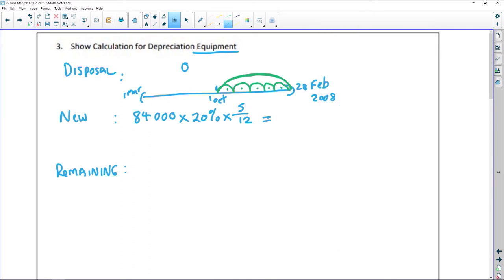On my old or remaining equipment, remember I need my cost minus accumulated depreciation because it is on the diminishing balance method, then I'm going to multiply this by 20% for the entire year, because the old equipment I would have owned for the entire year.